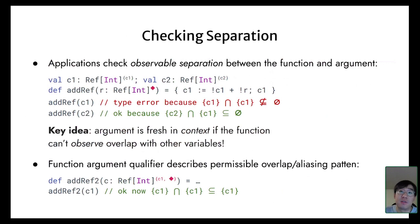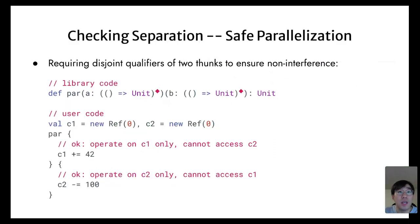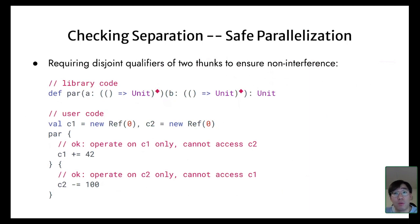We can also explicitly describe the permissible overlap or aliasing pattern by adding variable names into the argument qualifier. For example, we can add c1 into the function's argument qualifier, and then applying addref2 with argument c1 is perfectly fine. Ensuring separation is very useful in many applications. In the paper, we show how to type a parallel evaluation combinator that only accepts two thunks with disjoint qualifiers. In this way, we can ensure non-interference if we run those two thunks in parallel. In this example, the par combinator takes two thunks where one captures c1 and the other captures c2, which is safe to run in parallel.